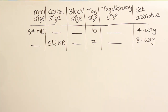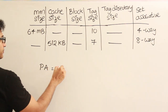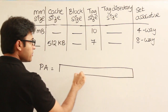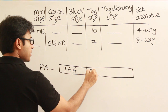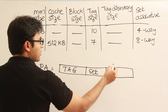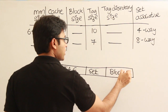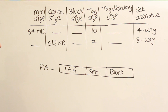Now we know that the physical address in the case of set-associative mapping is actually divided into three parts: one is the tag, another is the set number, and the other is the word offset or block offset.